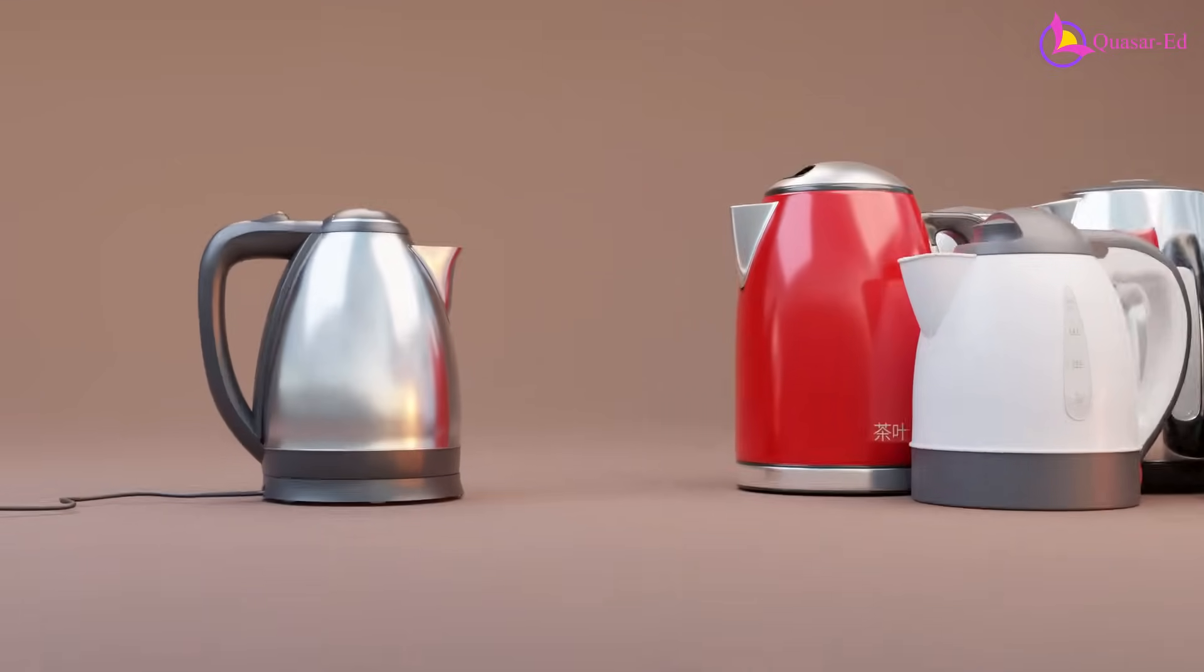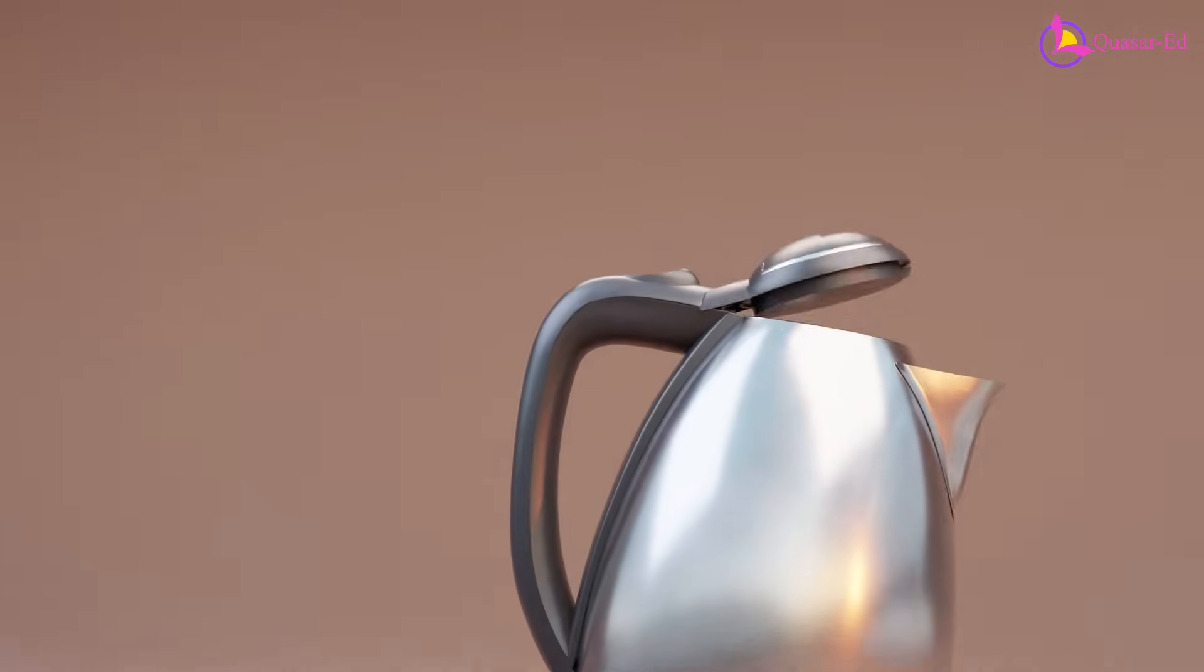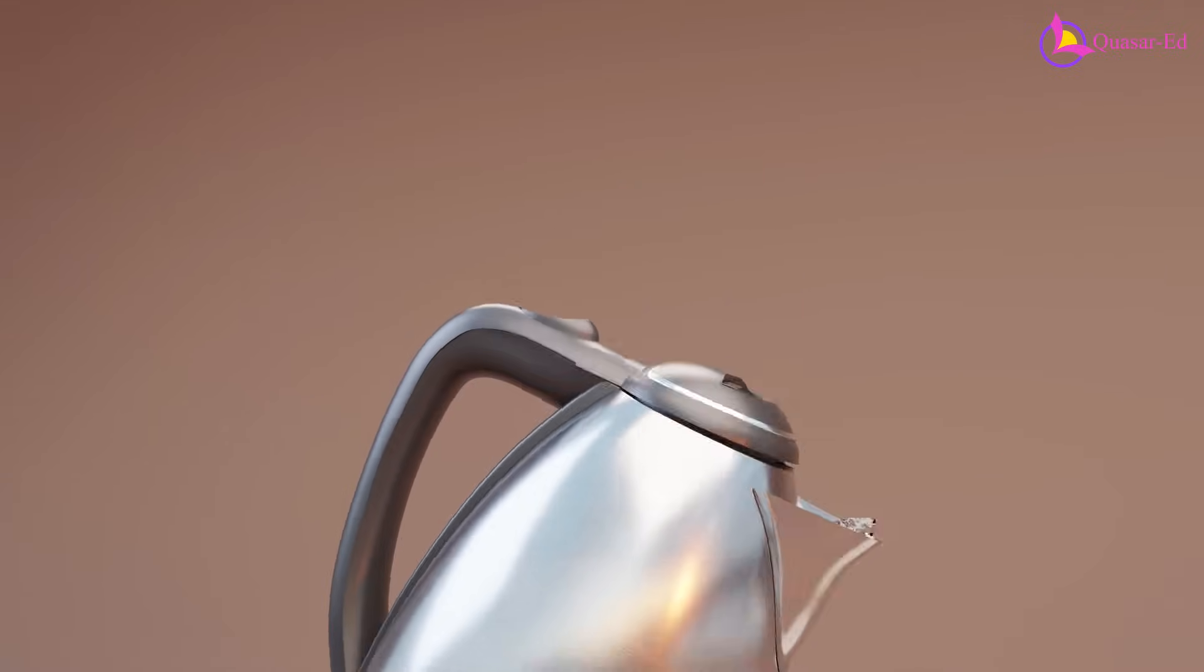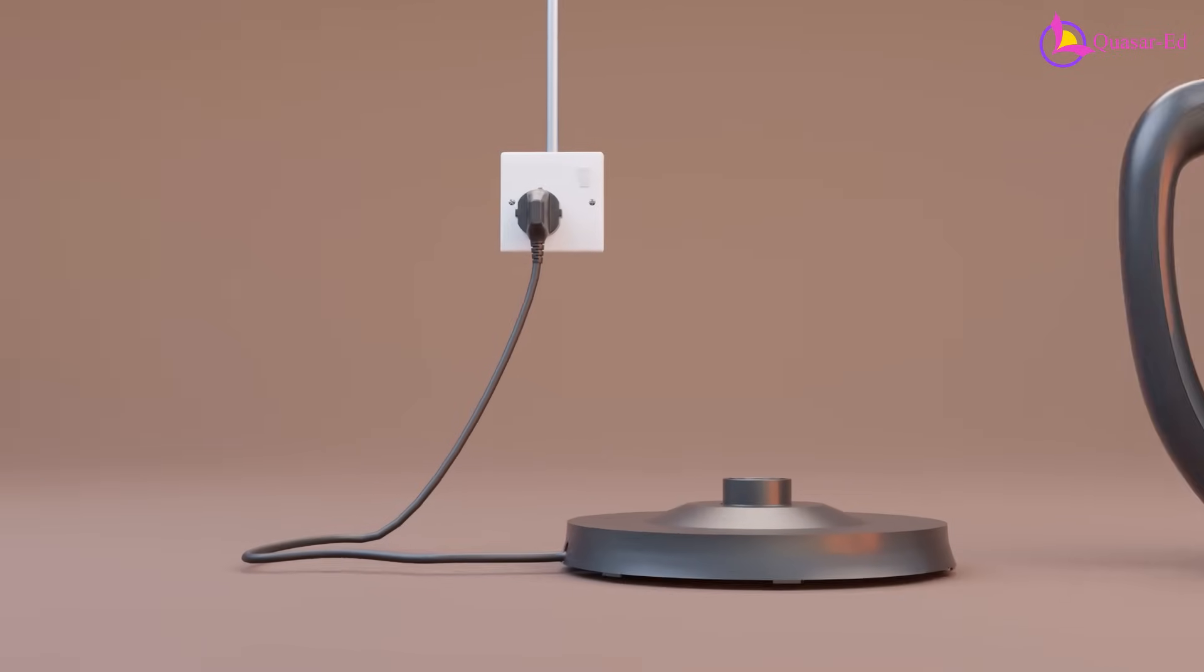In almost all electric kettles, the body is separated from the base, allowing you to move it freely for filling or pouring water without disconnecting the base from the electric socket.